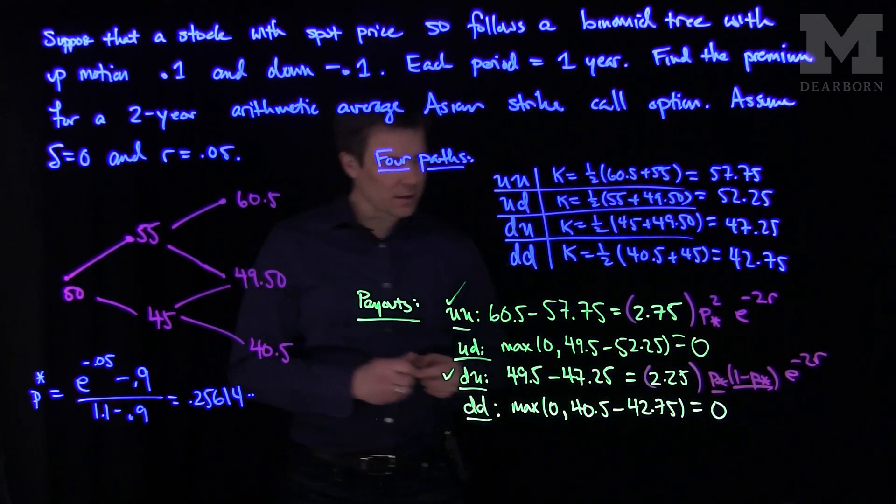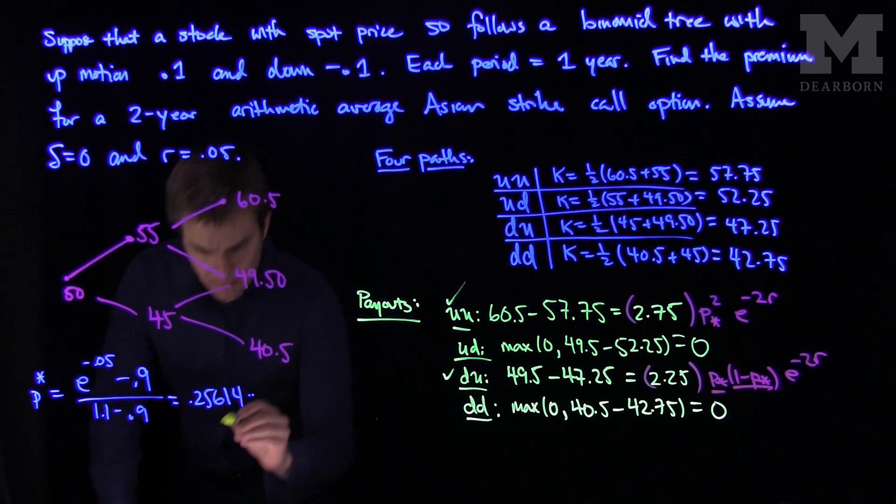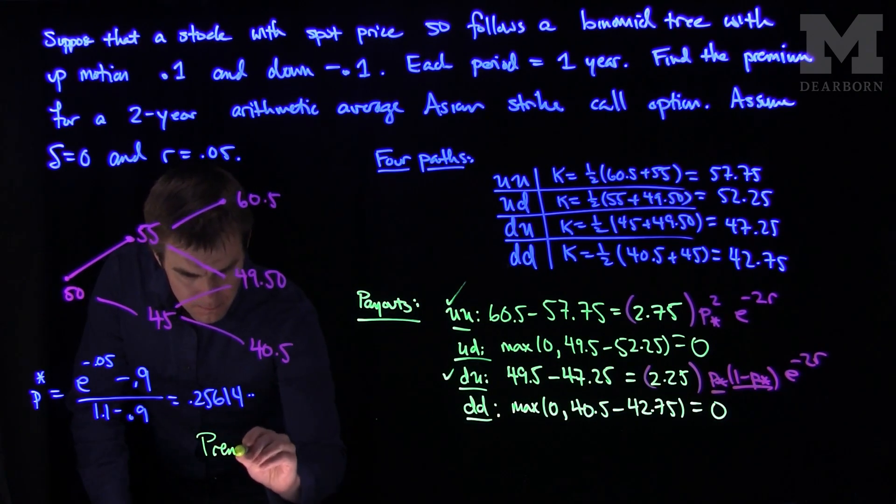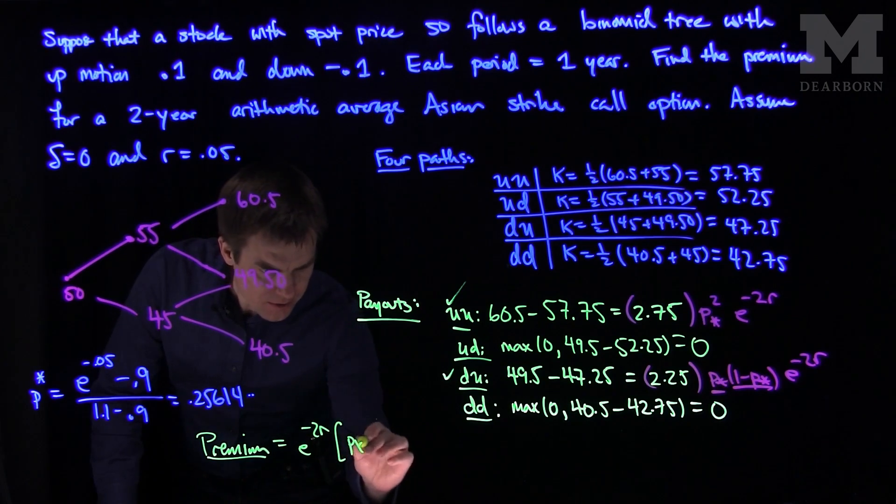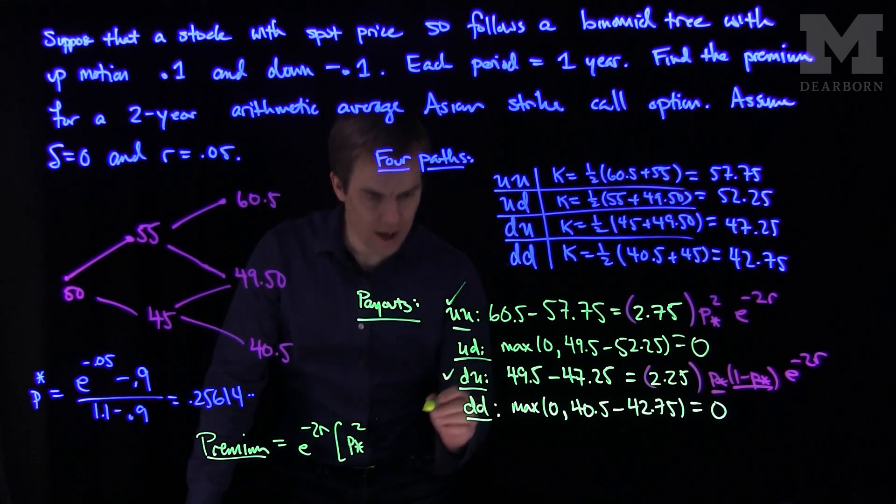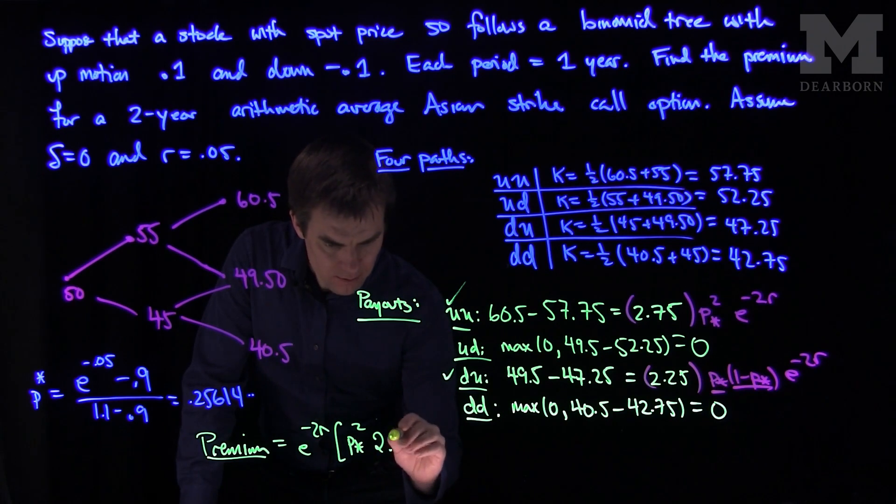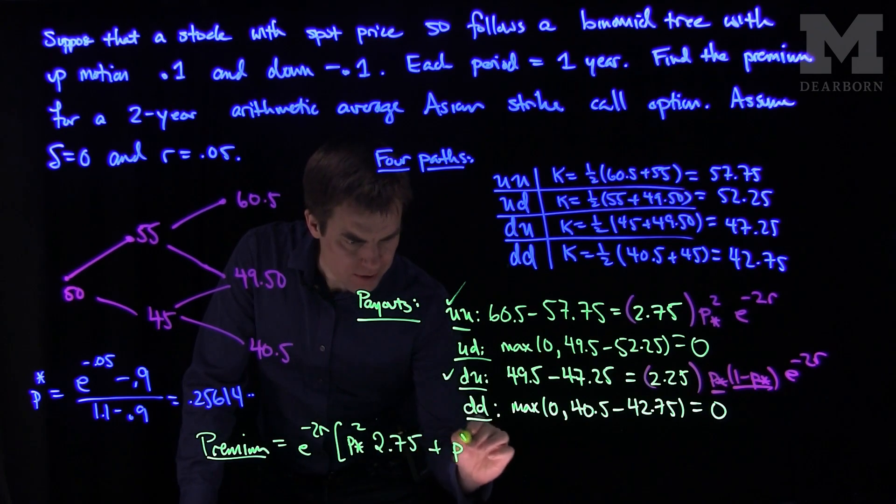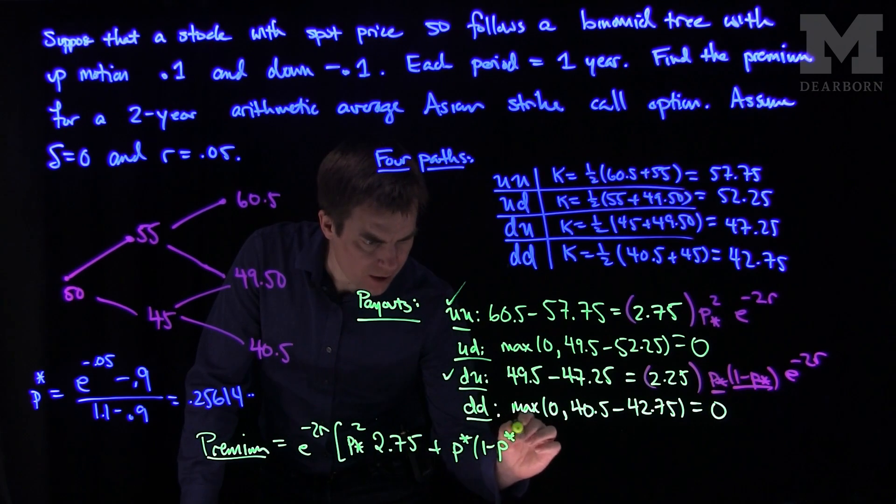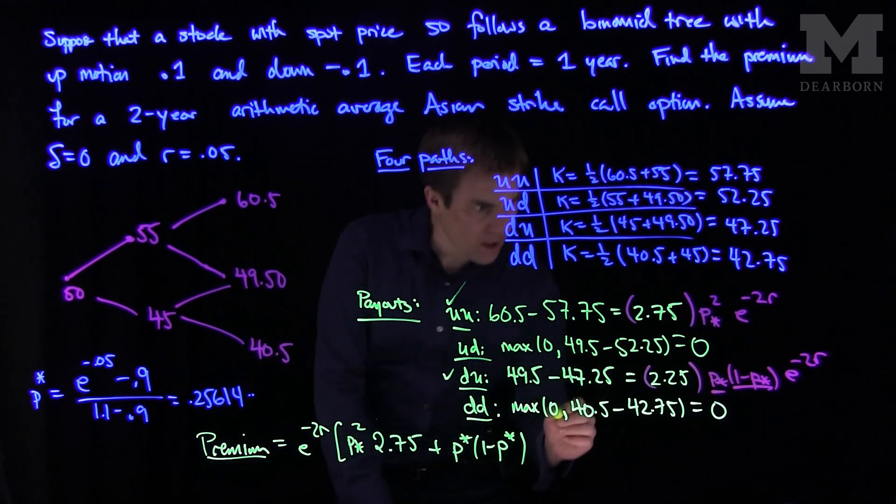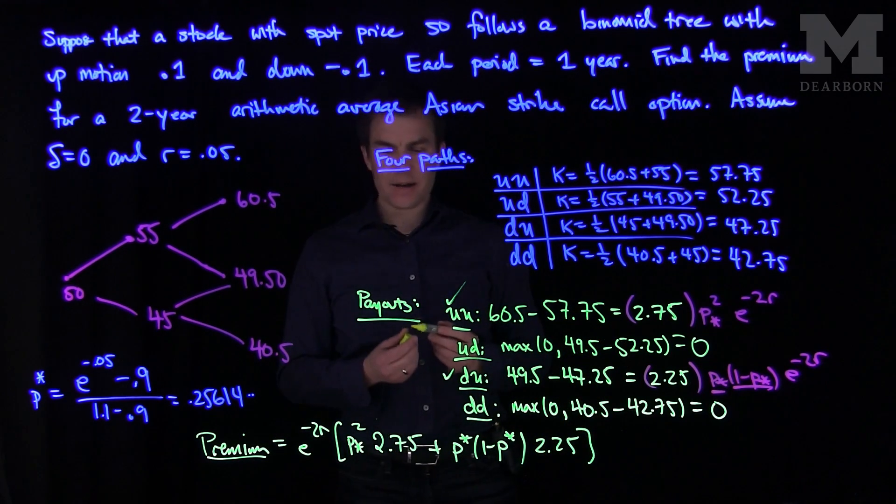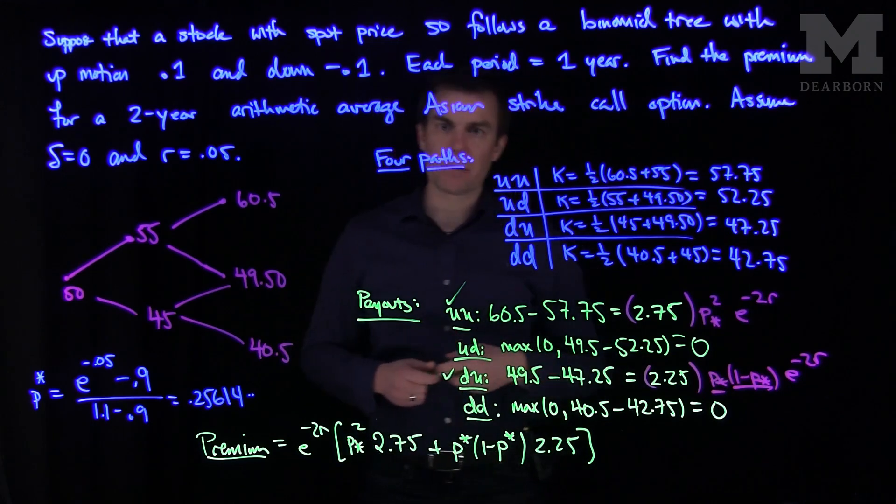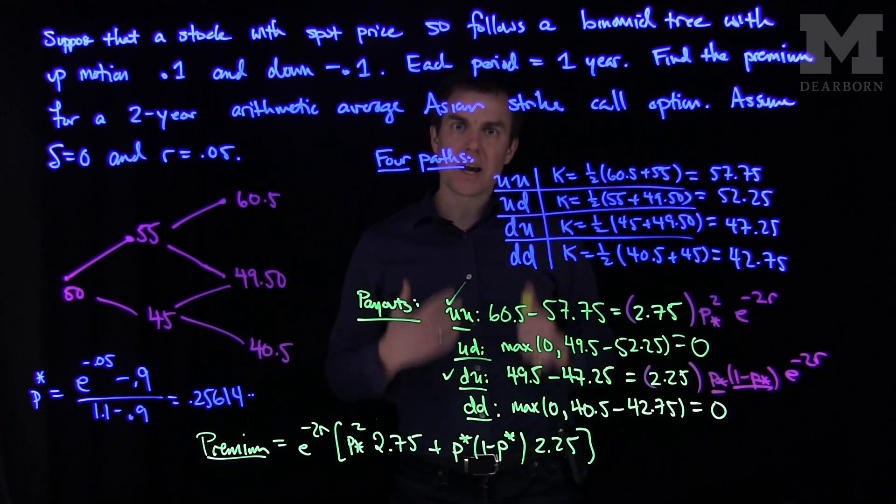So we see after this calculation that my premium will be e to the minus 2r p-star squared times 2.75 plus p-star 1 minus p-star, and then that will be hit with 2.25. And that, after the calculation, will give us the option premium for the arithmetic strike Asian call option. Thank you very much.